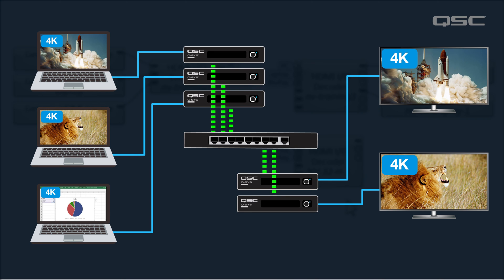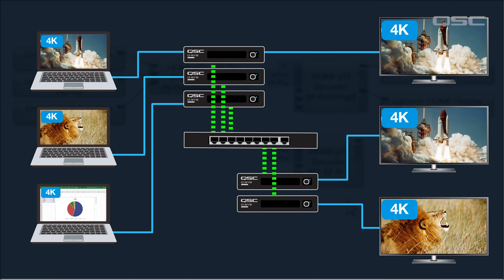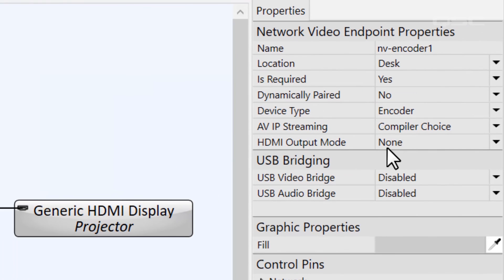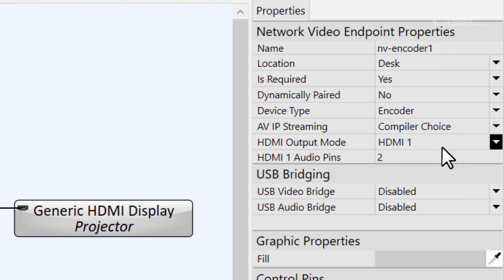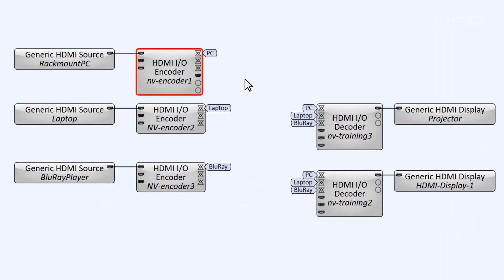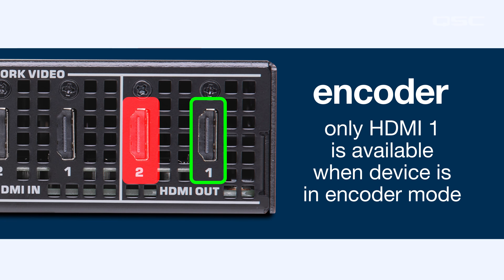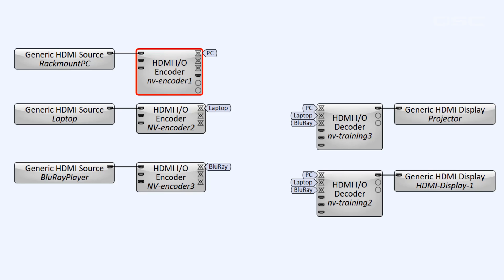Let's look at another scenario. Don't forget that you can also enable one HDMI output from an encoder. If you select an encoder and look at its properties, you'll see there's an option for HDMI output mode, which by default is set to None. You can set this to HDMI 1 to get a single output from this unit. Note that only HDMI 1 is an option — HDMI 2 is not available when the unit is configured as an encoder. Also keep in mind that the sources available for this output will be limited to the local HDMI inputs.